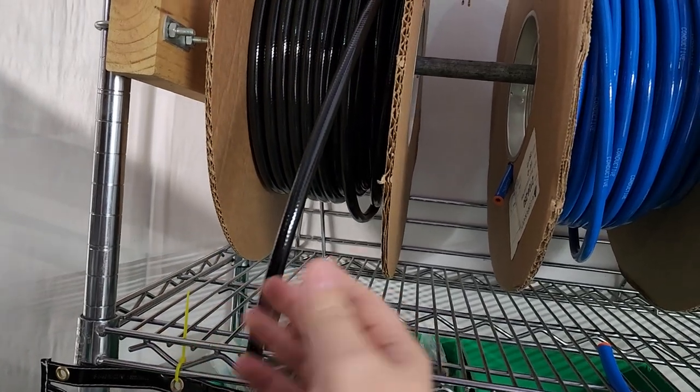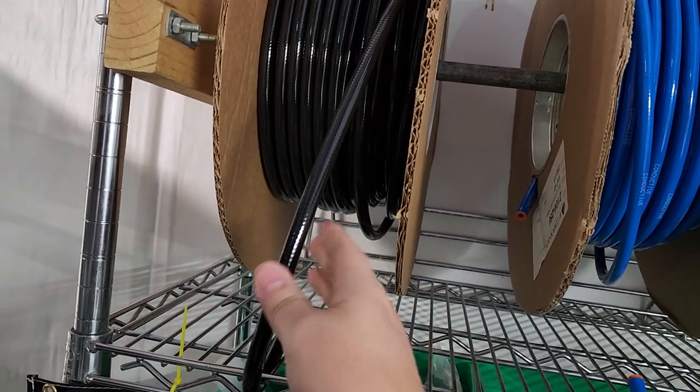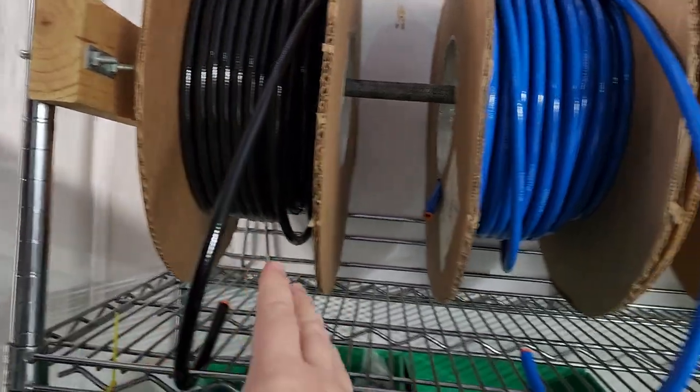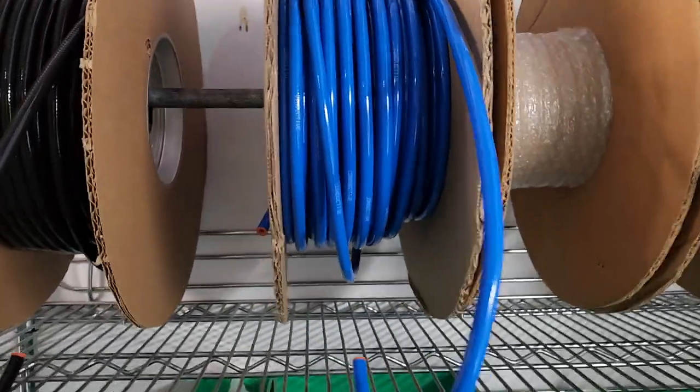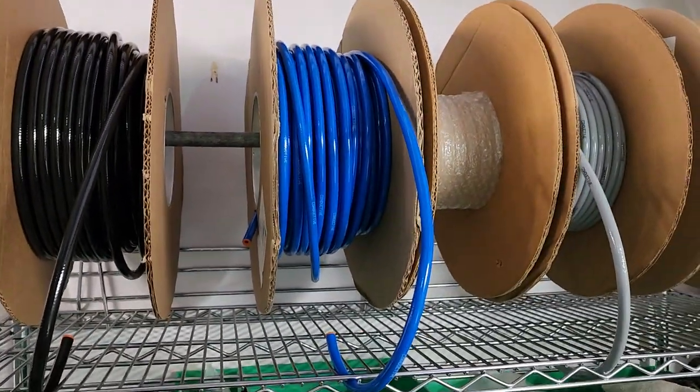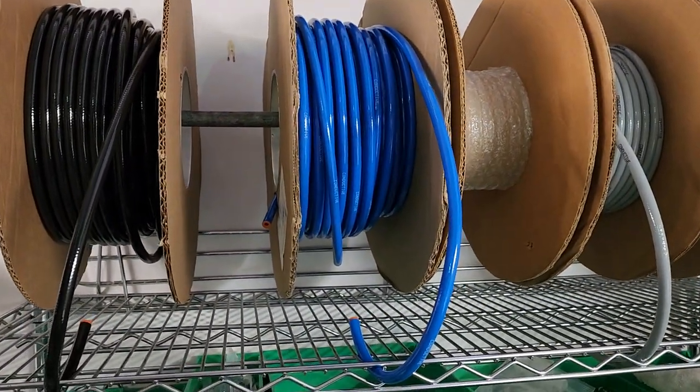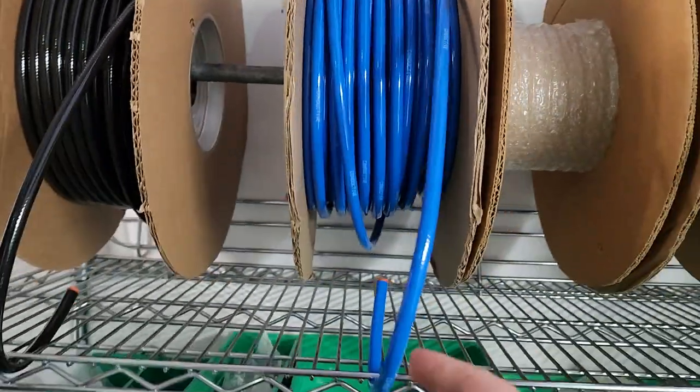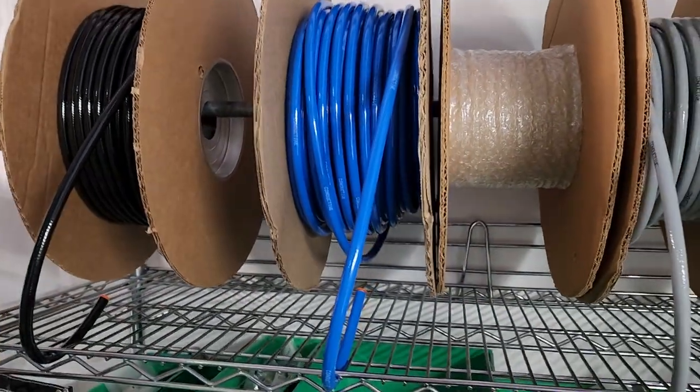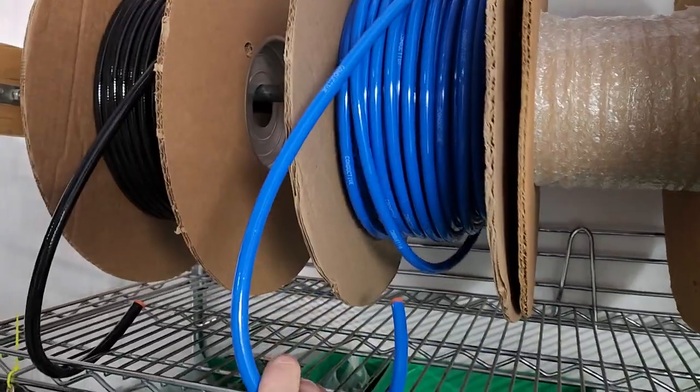Next is blue. Blue is a special one you'll find almost solely in operating environments because blue is for nitrous oxide. Nitrous oxide is laughing gas, and this is pretty regulated because nitrous oxide can be abused.